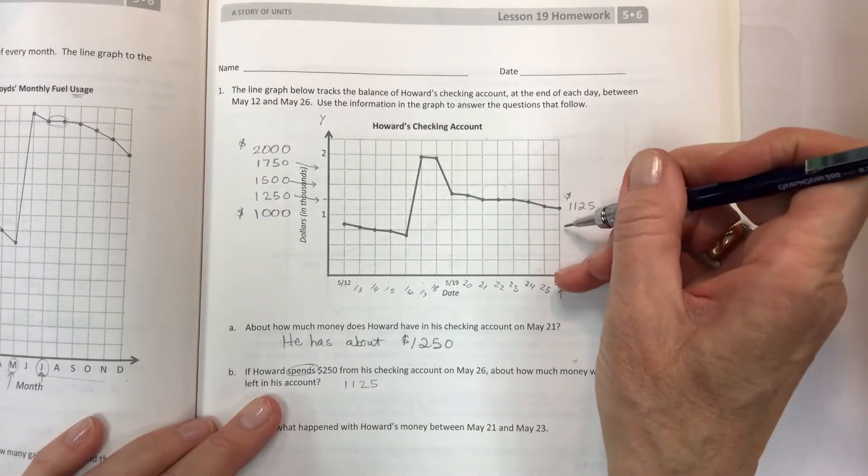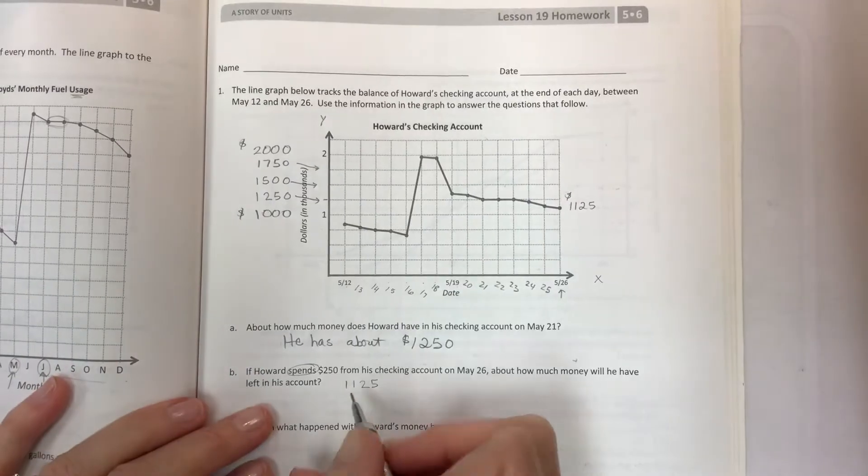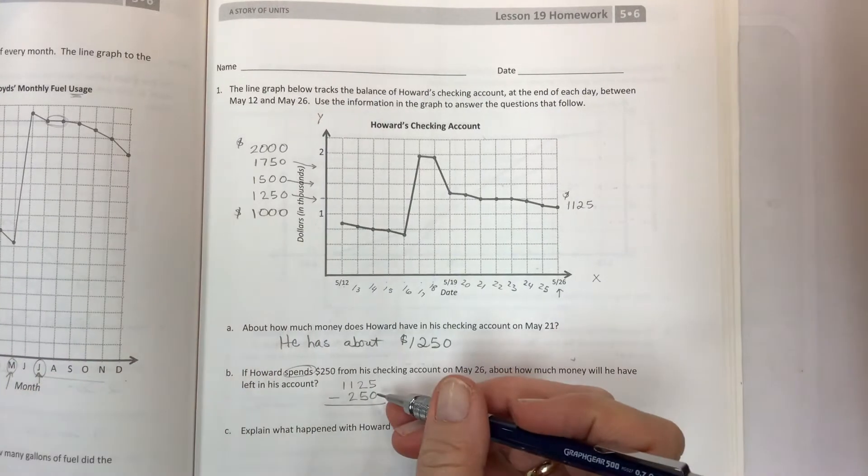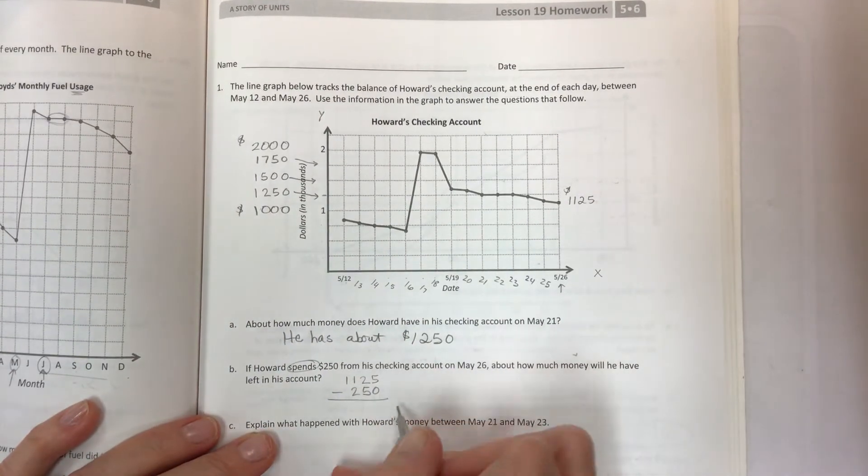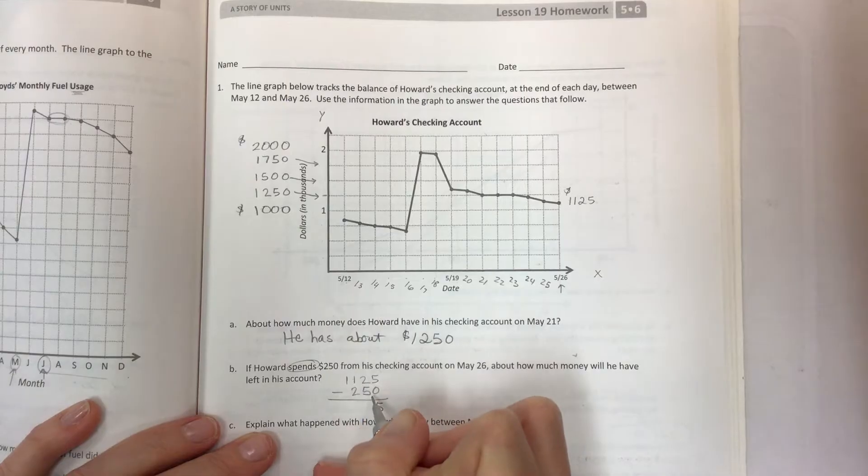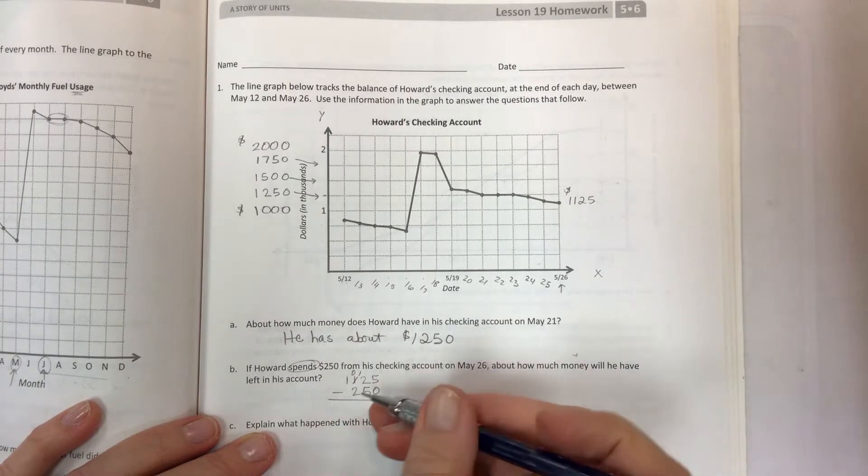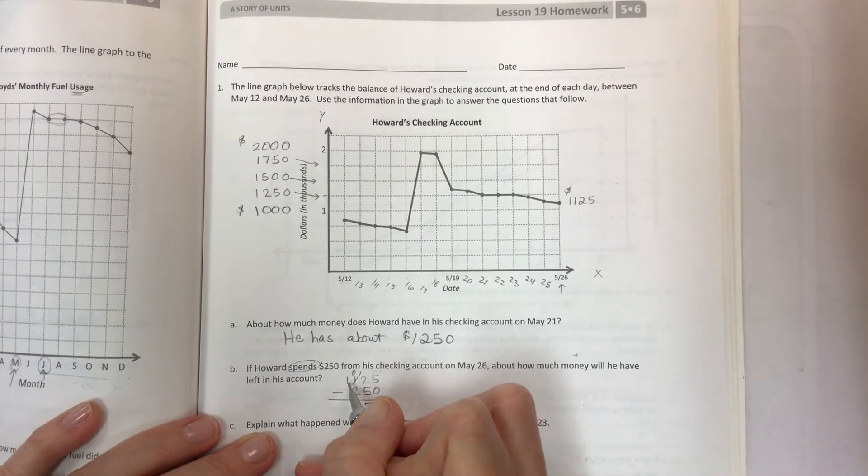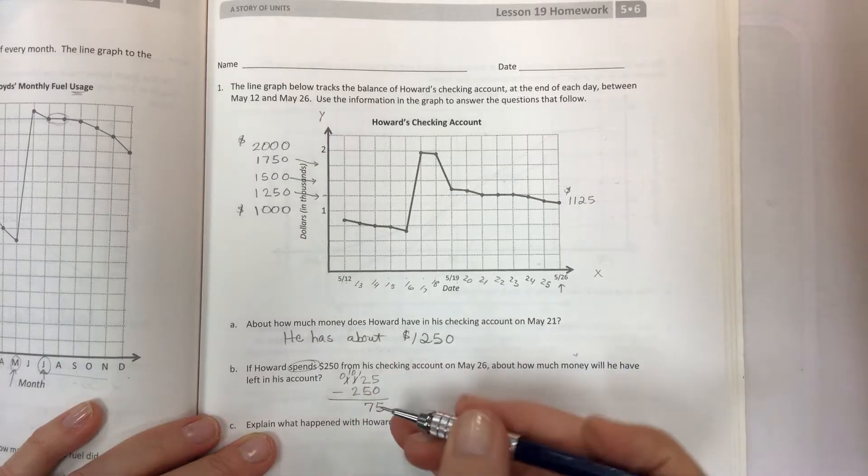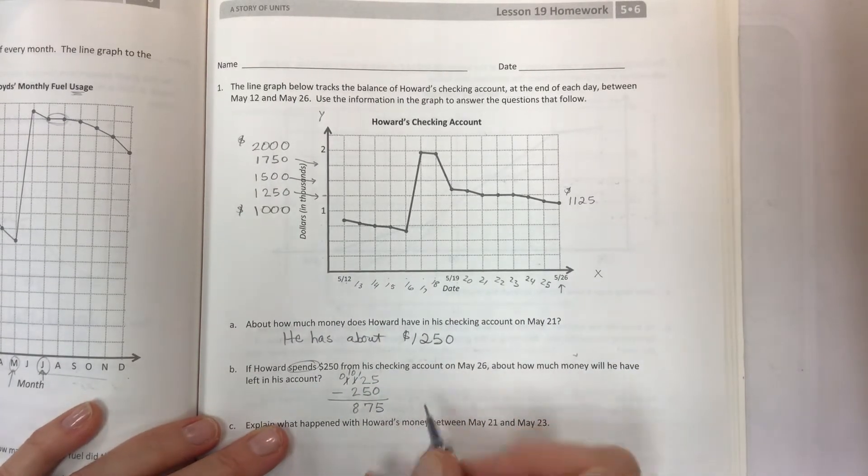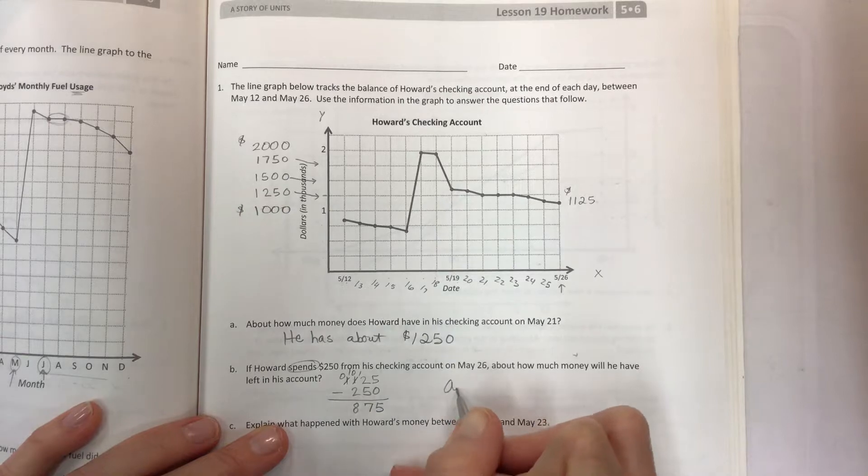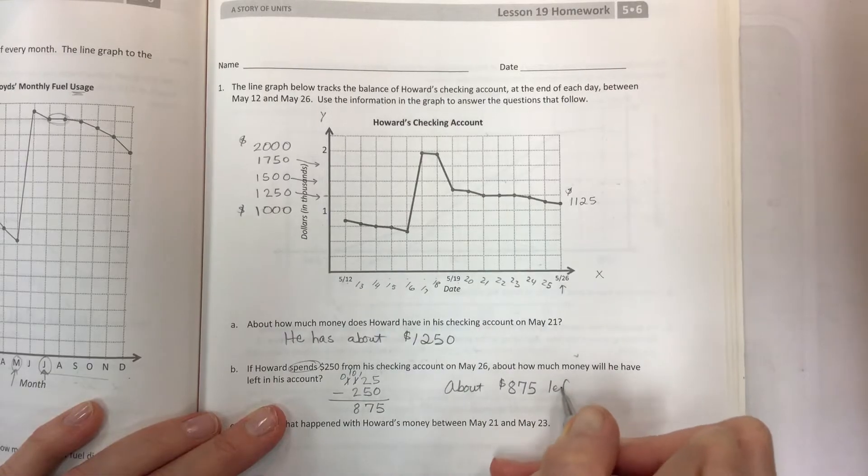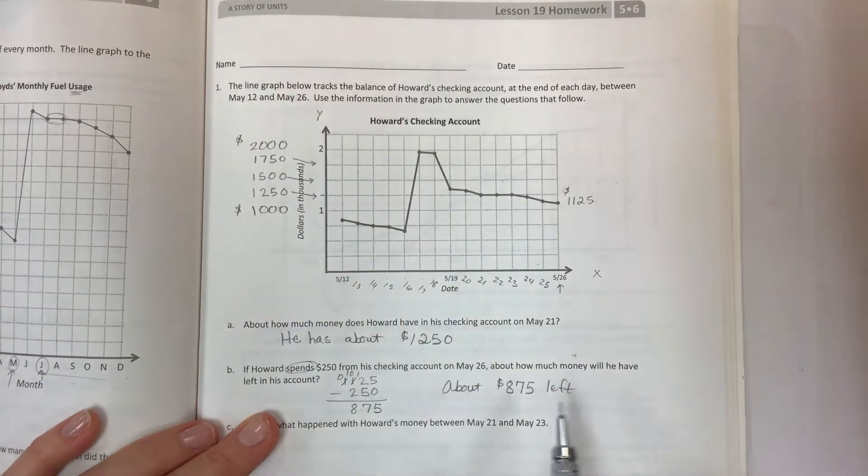The vocabulary is spending or money leaving, which would be subtraction. Now you can do your standard algorithm. 5 minus 0, 2 minus 5 you can't do. But if you go here and take 1 and give 10, you can do that. And then of course you can't take 2, so you go here, take 1, give 10. That leaves you with 875, so about $875 left. Remember that word problems should have word answers.